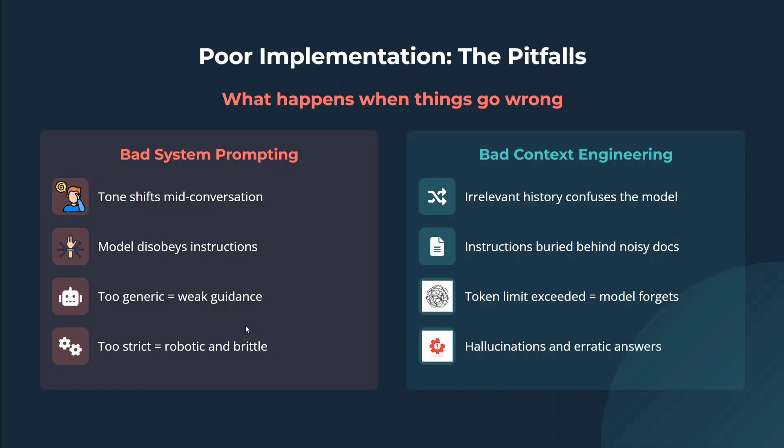Poor implementation. For example, if you are not good at system prompting, the tone shifts midway, the model disobeys instructions, answers are too generic or too strict — looking brittle and robotic. While in the case of bad context engineering, irrelevant history confuses the model. If you are not making your context in a well-defined way, unnecessary information coming into the context will confuse the model. Instructions get buried behind noisy docs — if you provide too much context, some instructions get bloated off. Token limitations exist, hence the model forgets, leading to hallucination and erratic answers.